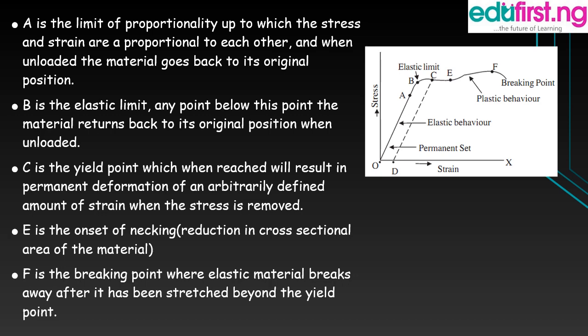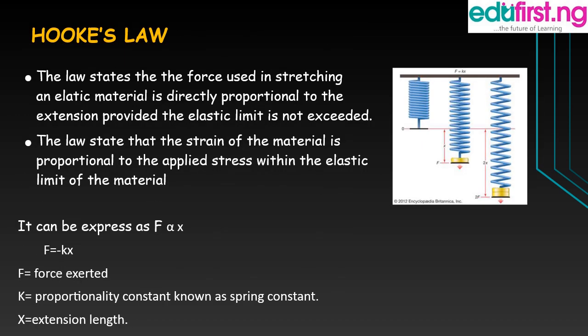Hooke's Law can be stated in different forms. One form states that the force used in stretching an elastic material is directly proportional to the extension. Another form states that the strain of the material is proportional to the applied stress. So F is directly proportional to x, where x is the extension, and F equals kx. We introduce the proportionality constant k, which is called the spring constant, and x is the extension or change in length.